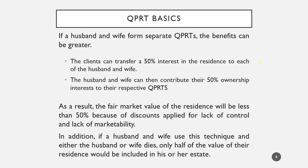One planning technique available for a husband and wife is that rather than having one spouse contribute 100% of the property to a QPRT, they might consider deeding it 50% to husband and 50% to wife, and then each contributes their 50% ownership interest to their respective QPRTs. Because each QPRT only owns 50% of the property, there'll be a discount for lack of control and lack of marketability. So if the house were worth $1 million, a 50% interest might be discounted 15–20%, reducing the value from $500,000 down to perhaps $400,000 or even $300,000.